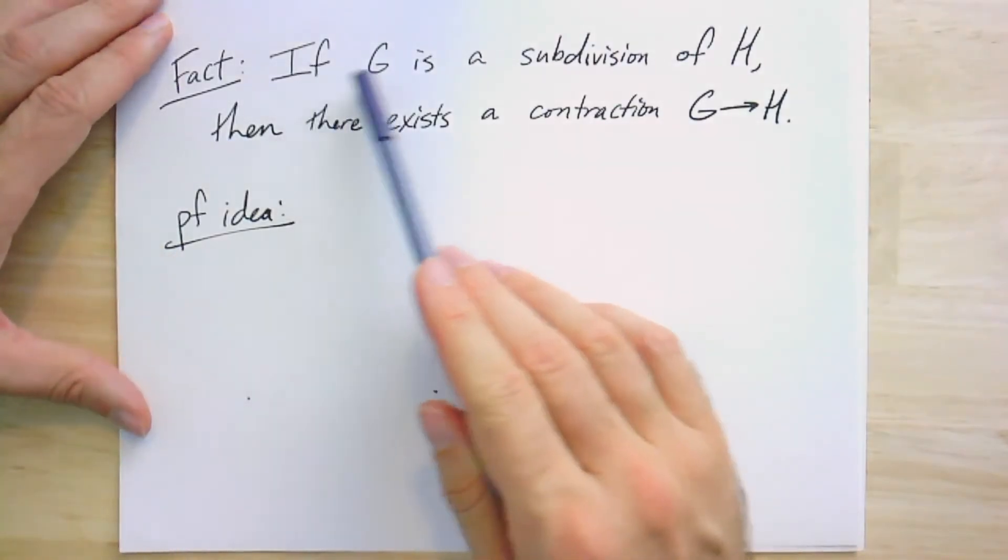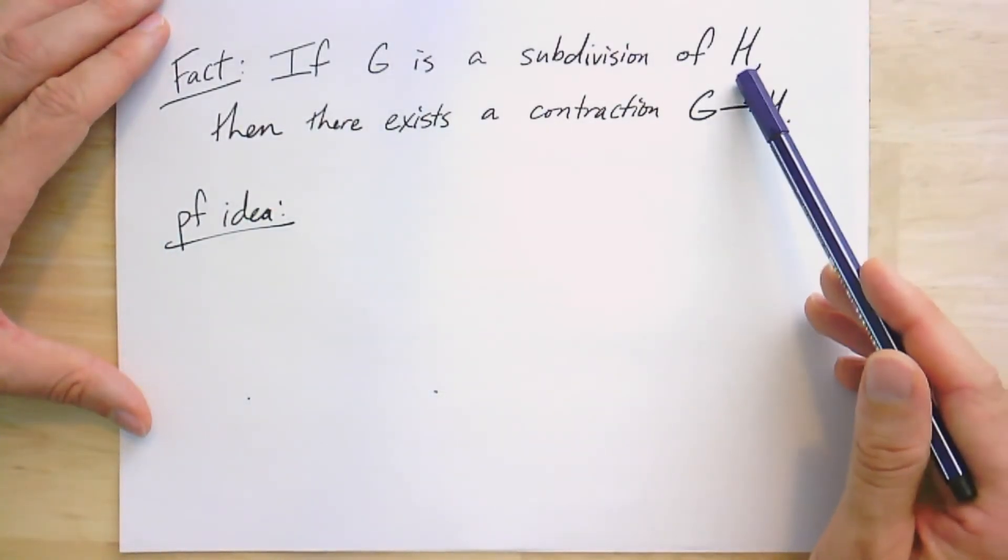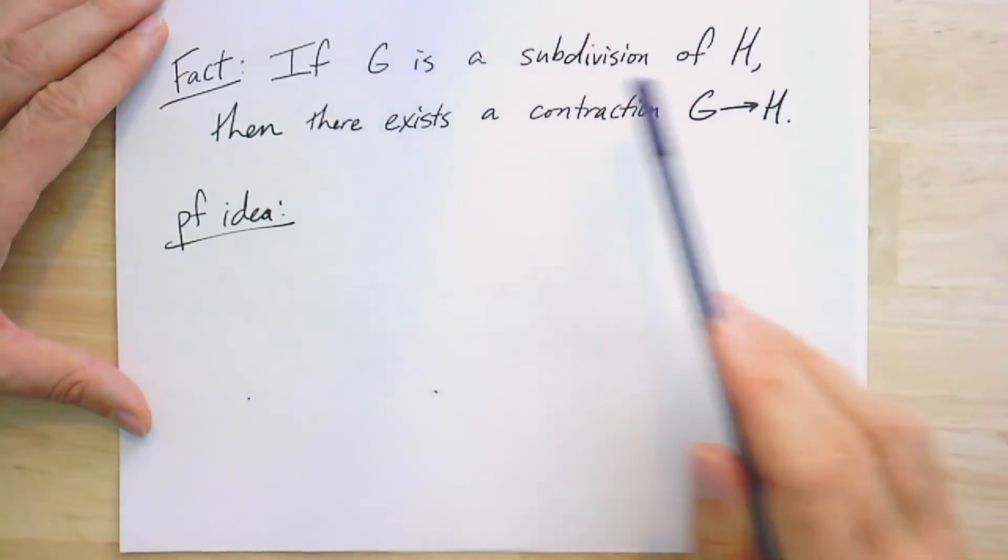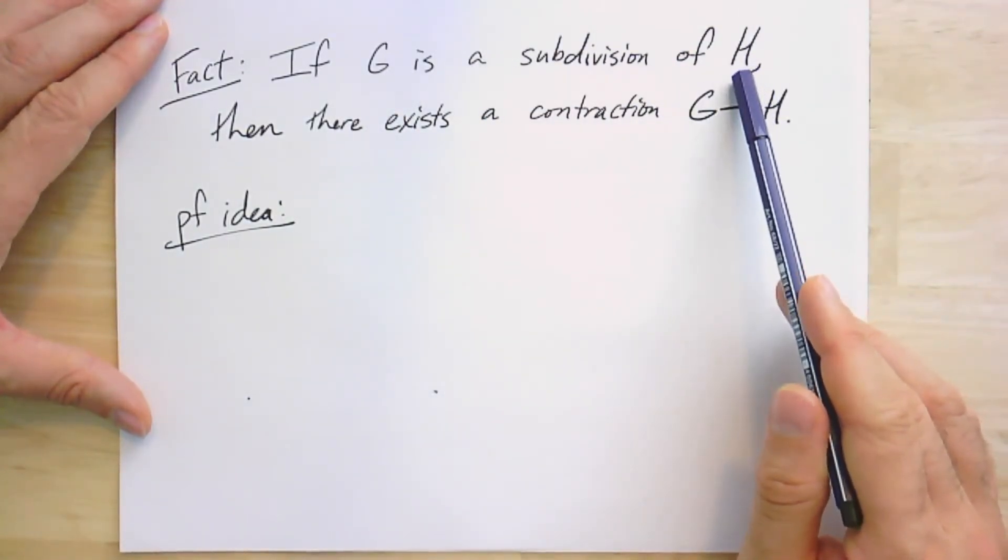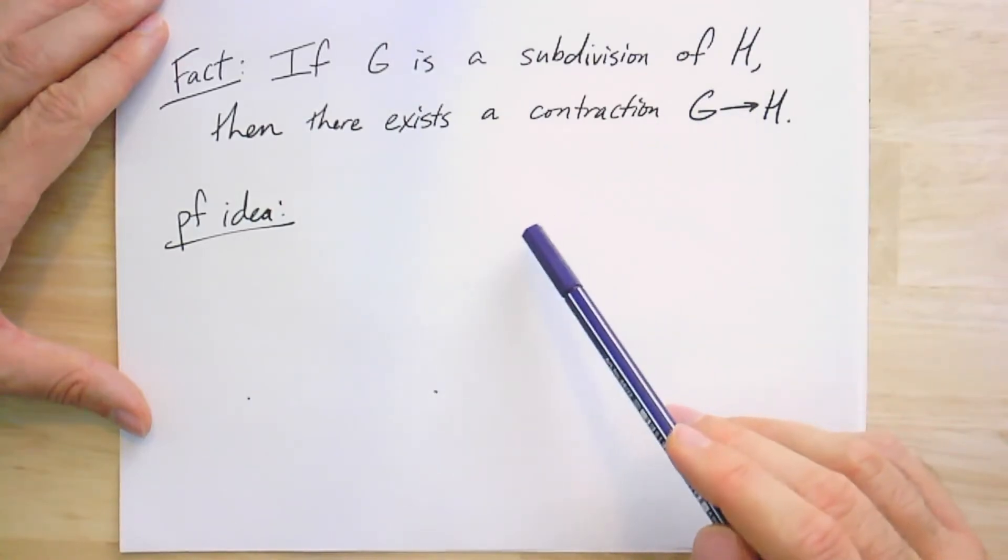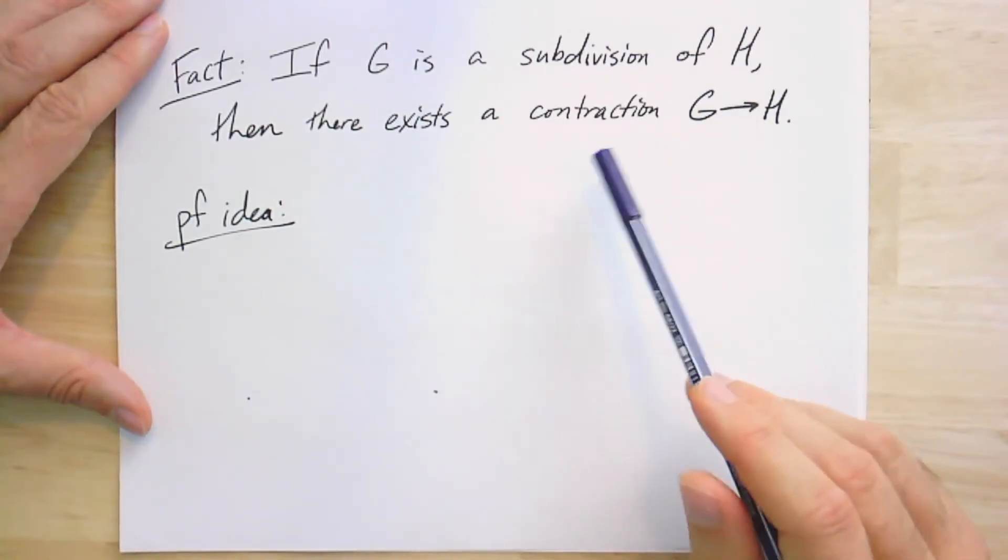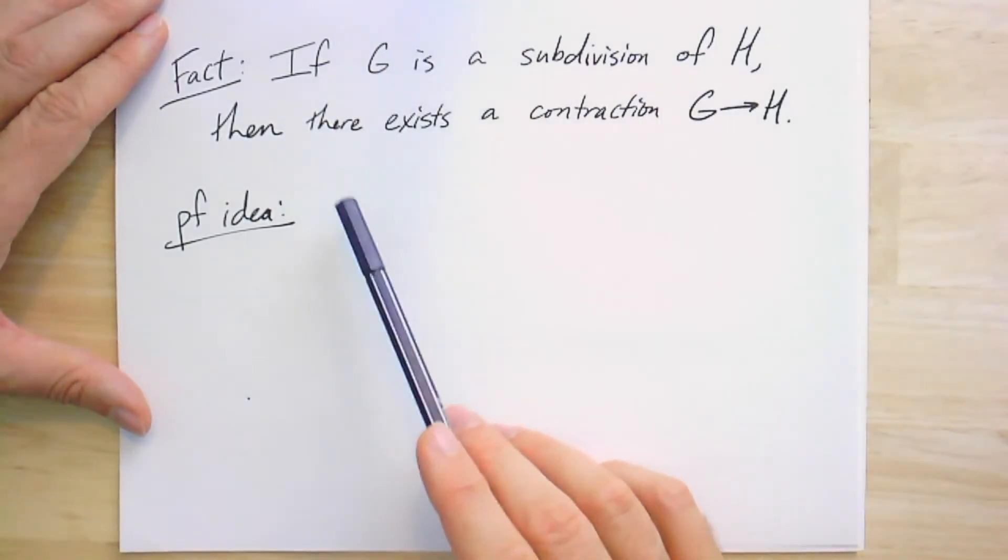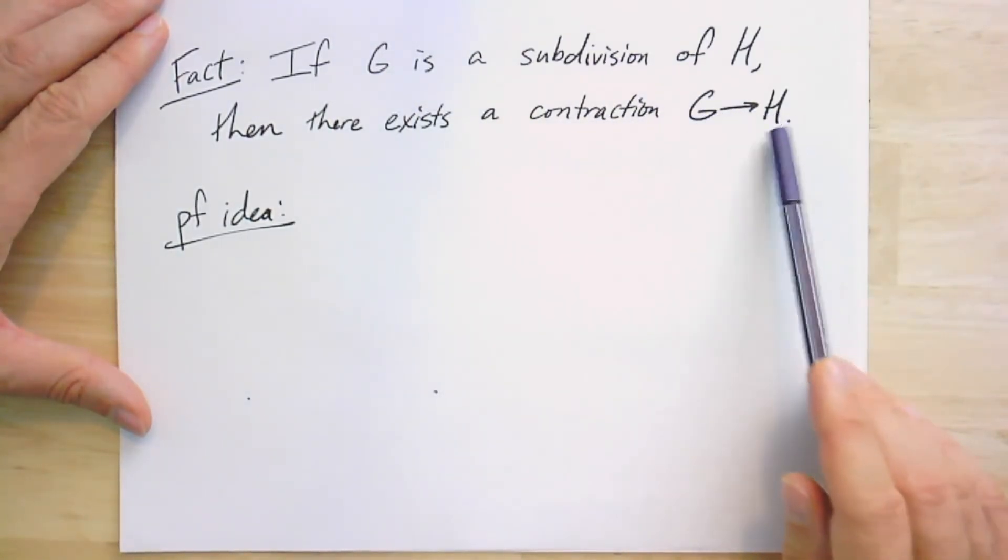So let's let G be a subdivision of a graph H. That is, we form G by taking the graph H and splitting some of the edges into paths. The claim here is that if that's the case, if that's how we formed G, then there's a contraction from G to H.